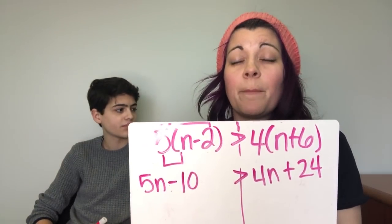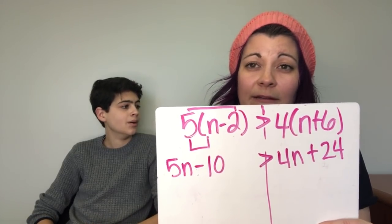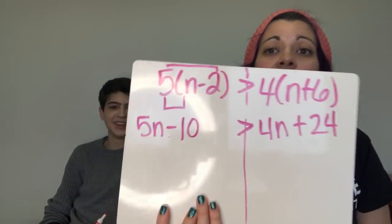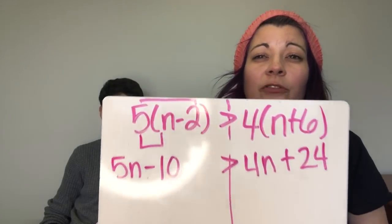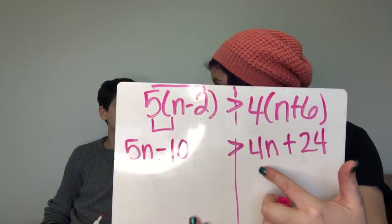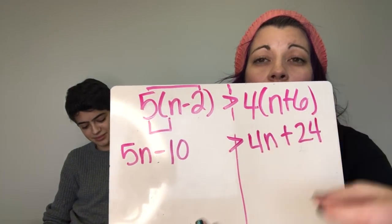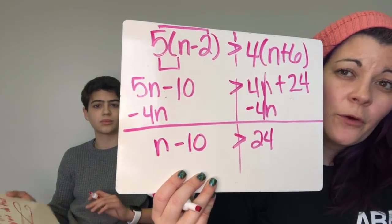We've done distributive property. The next step is to combine like terms on the left and right side. I check the left side — nothing to combine. I check the right side — nothing to combine either. The third step is to get the variables on one side of the inequality. I like to move the smallest one, so I subtract 4n from both sides. 5n minus 4n is n, so we have n minus 10 on the left and 24 on the right.